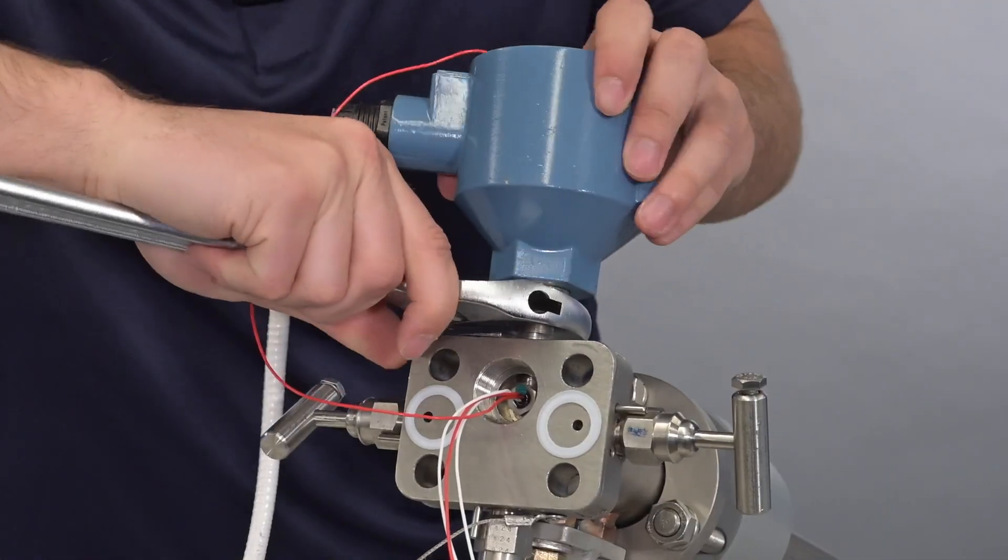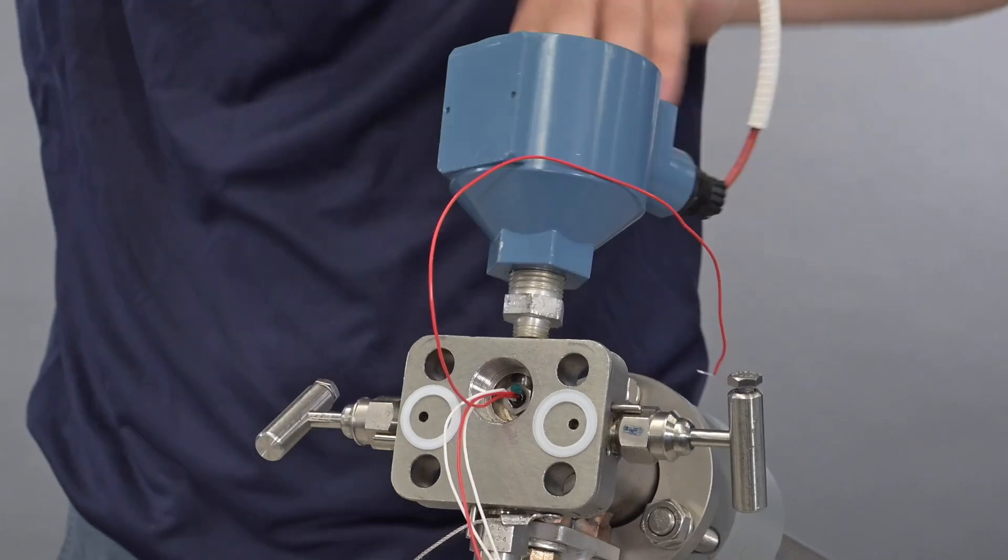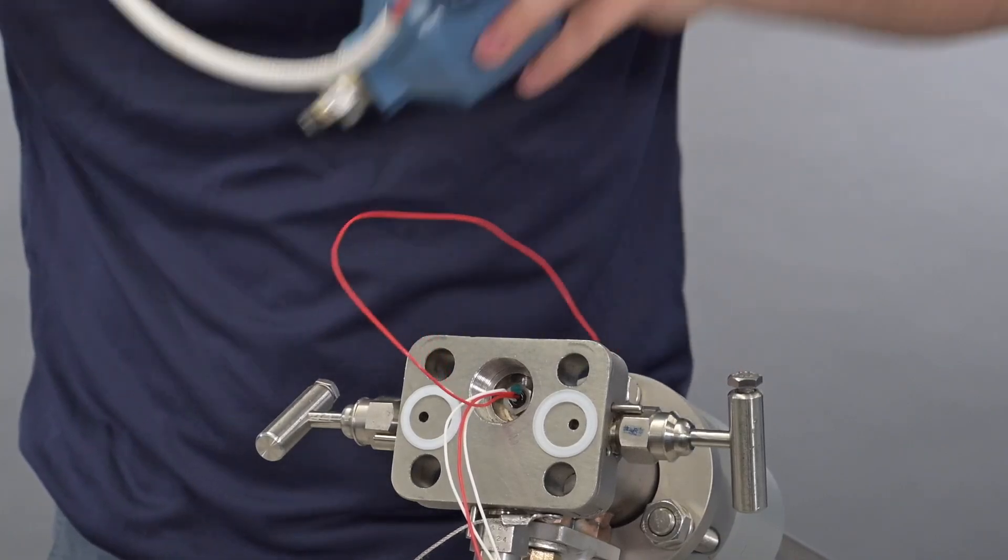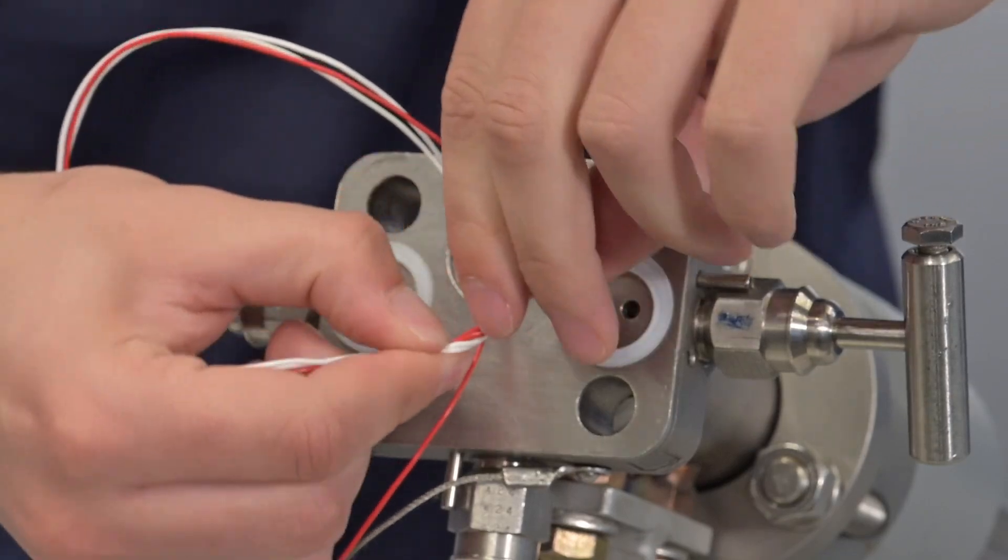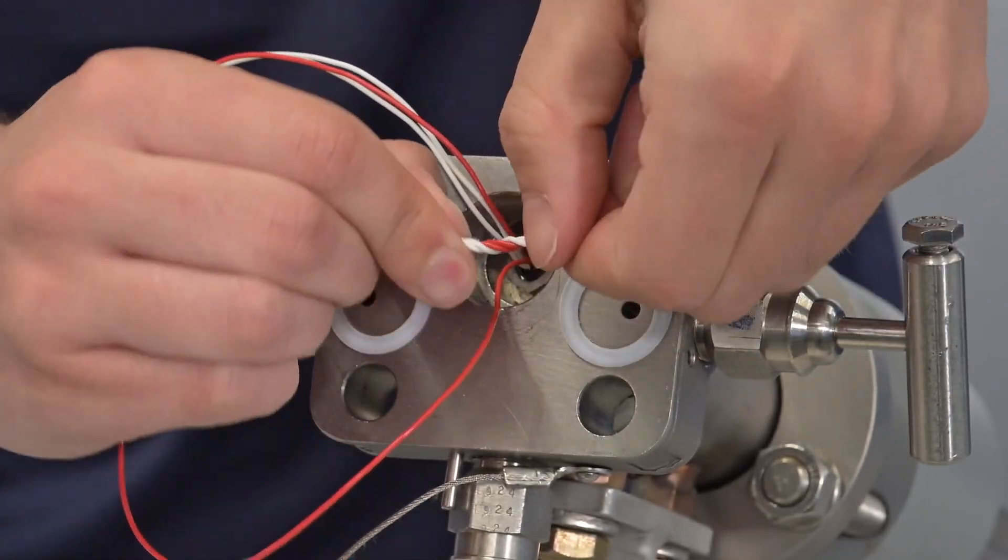Remove the RTD housing from the manifold using a wrench first and then using your hand once loose. Twist or tape the ends of the RTD wires together and then thread them through the connection port as shown below.